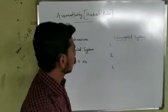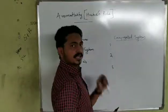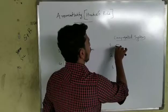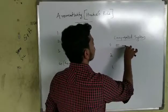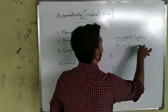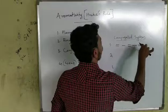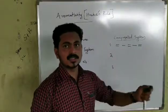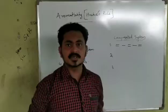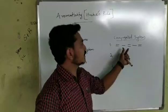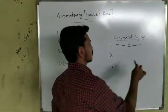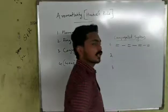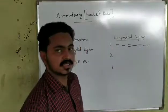The first type of conjugated system is alternate single and double bonds. For example: carbon double bond carbon, single bond carbon, double bond carbon, single bond carbon. This alternating single and double bond system is called a conjugated system.